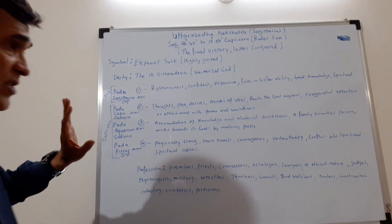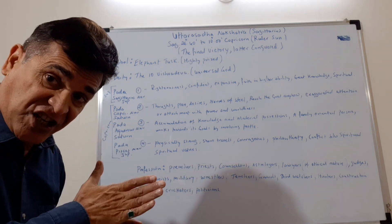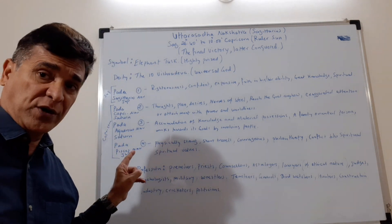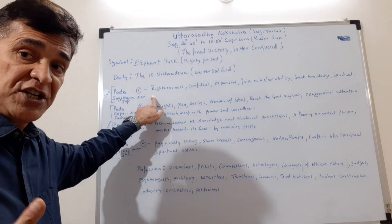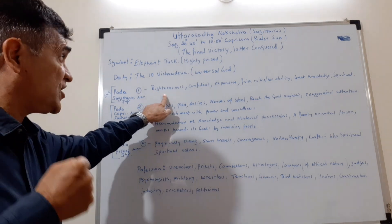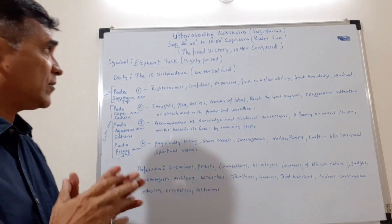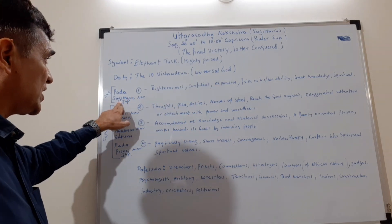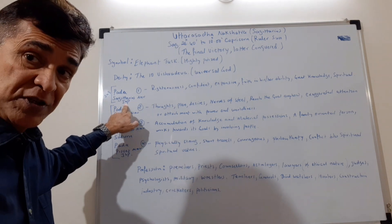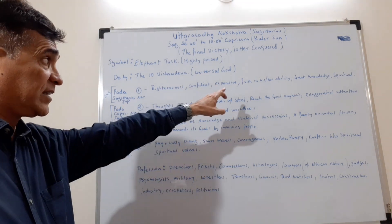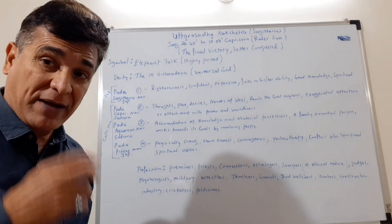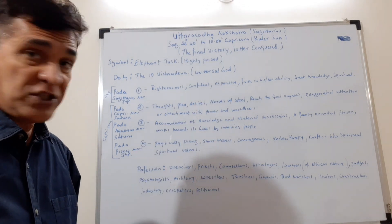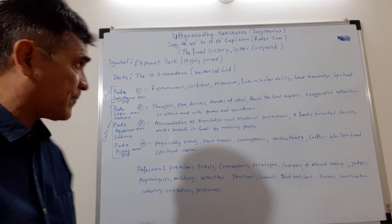If you are born in the first pada, you are in Sagittarius; the other three padas fall in Capricorn. In the first pada, your nature is righteous, confident, and expansive — because it is the Sagittarius Navamsha ruled by Jupiter, a planet of expansion. You have full faith in your own capacity and ability, great knowledge, and you are very spiritual.